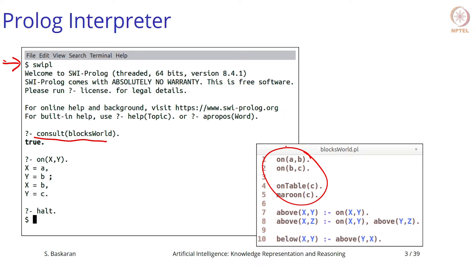We want to define the above relation. The base clause says: X is above Y if X is on Y. The recursive clause says: X is above Z if X is on Y and Y is above Z. This is very similar in flavor to the grandparent or connected graph relation we defined earlier. You can also define the inverse: X is below Y if Y is above X.